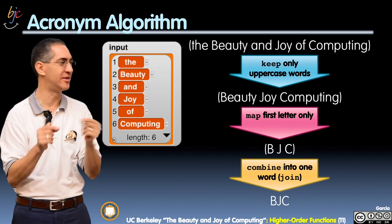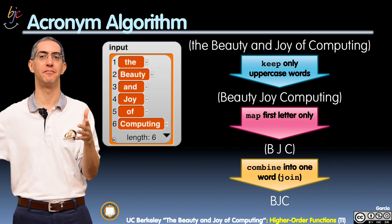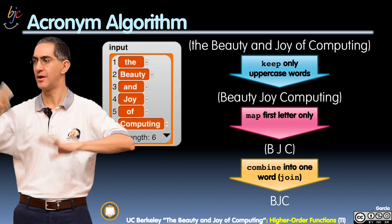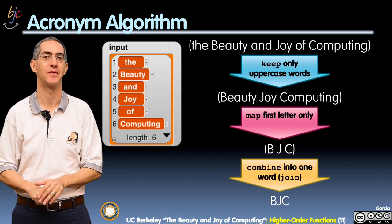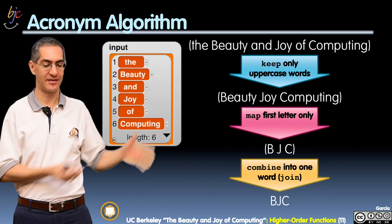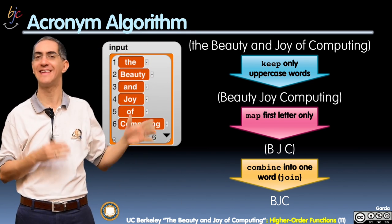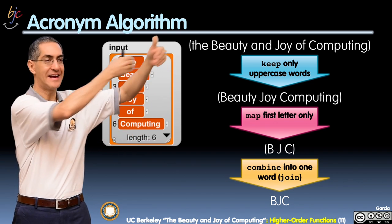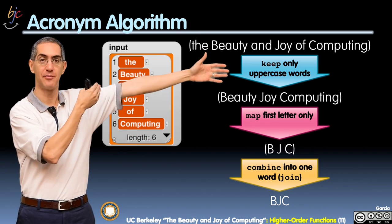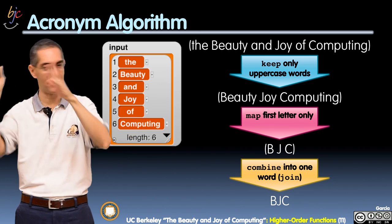So rather than saying, well is it the length of the word, is it on my list of words that are bad, if they're lowercase that means we're not going to include them in the acronym. Uppercase we do, lowercase we don't. Okay, so how do we do this? There's a data flow diagram where data comes in at the top. You see here 'the Beauty and Joy of Computing' as a list, and by the way we write lists with parentheses.